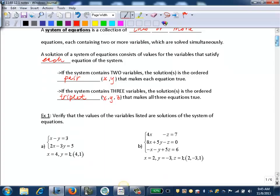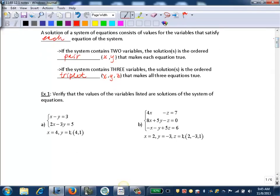So let's look at example one. We want to verify that the values of the variables listed are solutions of the system of equations. We know that if (4,1) is a solution of this system, it must satisfy both equations. It should make both equations true. So all we need to do to check is plug into each one and make sure we get true statements.